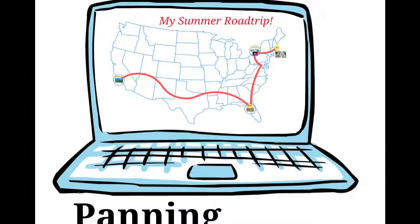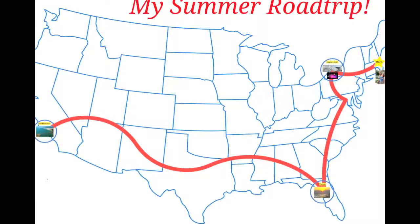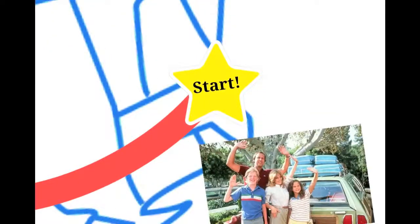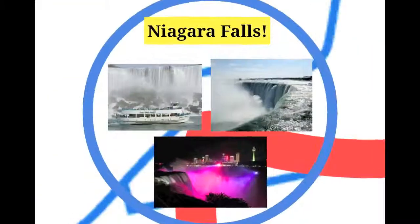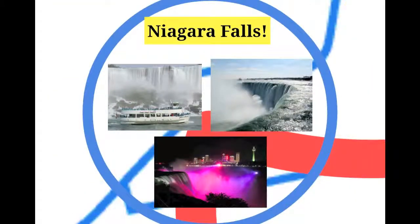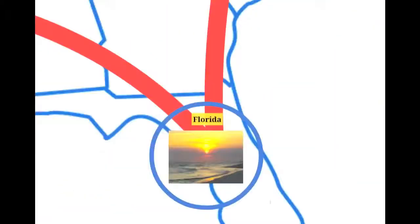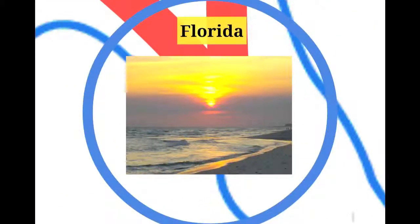This demo shows how you might use the panning transition. Panning is the movement up, down, left, or right from one spot on the screen to another. This presentation is about a road trip — showing where someone has been and what they saw. We start by zooming in on the starting city, then pan to the first stop, Niagara Falls. Once we're here, we can treat it like a regular PowerPoint slide with text, bullet points, and photos. Next we go on to Florida.